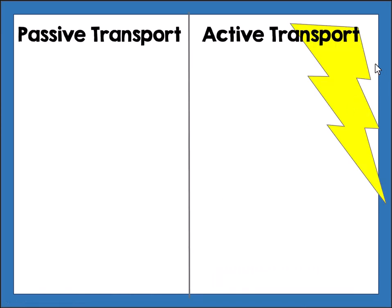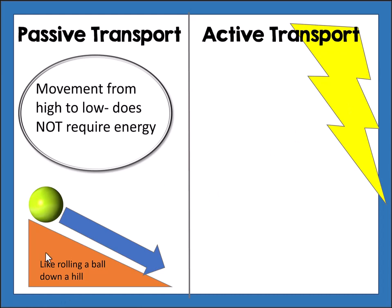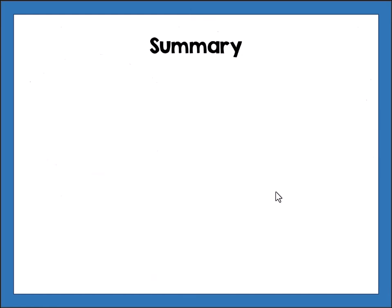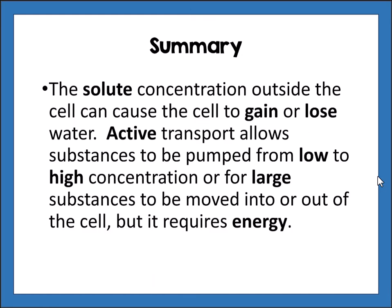A helpful analogy: passive transport is like rolling a ball down a hill — movement from high to low concentration requires no energy. Active transport is like rolling a ball up a hill — movement from low concentration to high concentration does require energy. In summary, active transport allows substances to be pumped from low to high concentration, or large substances to be moved in or out of the cell, but it requires energy.